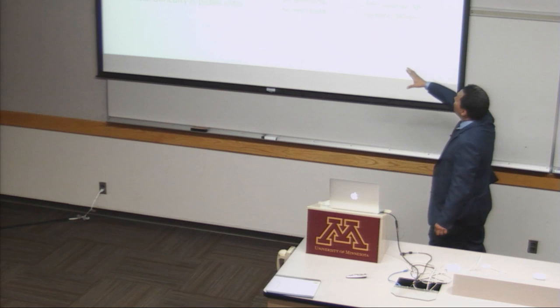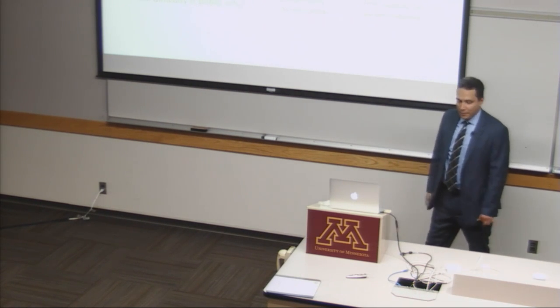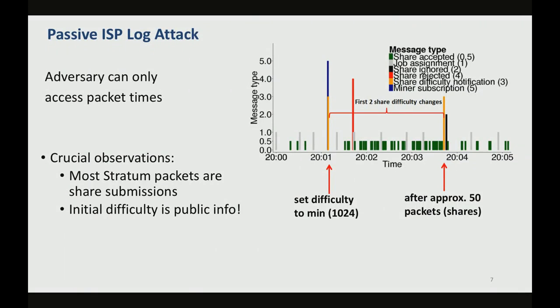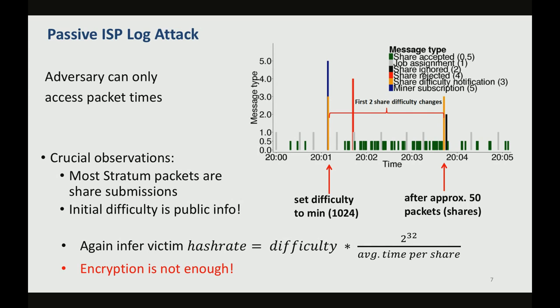The first observation is that approximately the first 50 packets of the Stratum exchange are not share-difficulty-change packets. So we again have an interval of constant difficulty. The next thing the attacker realizes is that most pools actually set a default difficulty — in our case, this was a value of 1024. So the attacker simply uses that value. Finally, we noted before that most Stratum packets are actually share submissions which are accepted. So he simply counts the first 50 packets, takes the time that these packets require to be transmitted, uses the default difficulty, applies the same formula, and again infers the actual payout of the victim.